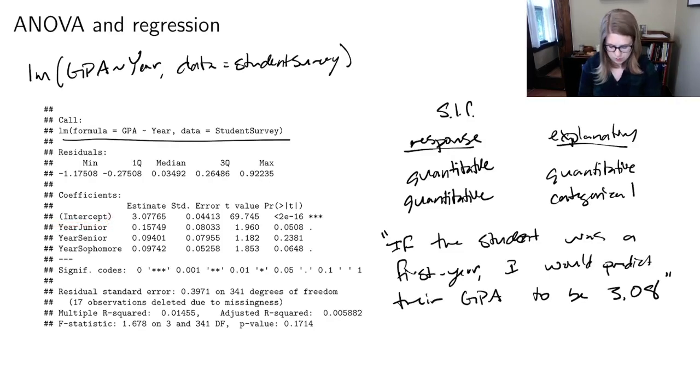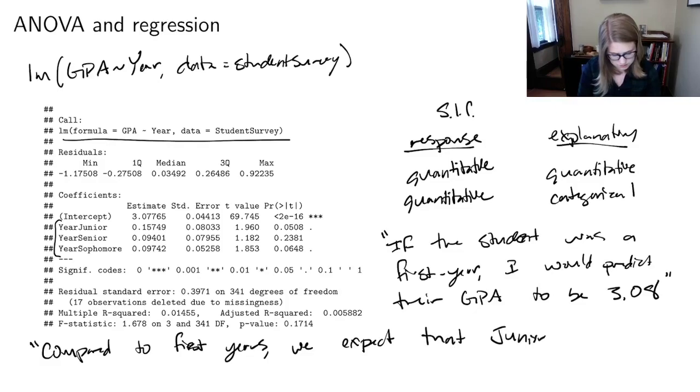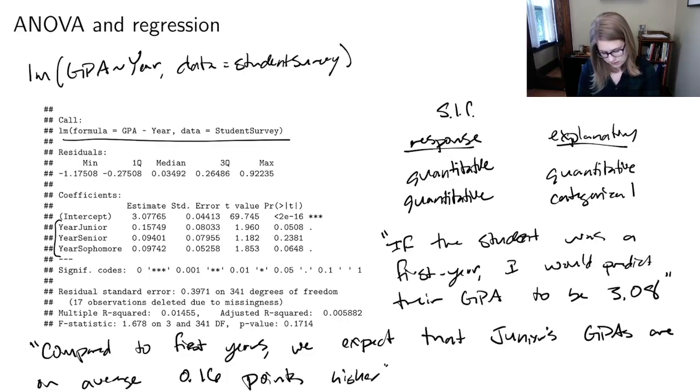And then when we're going to interpret the other terms in our table, we're going to have to do compared to the reference group. So in this case, compared to first years, we expect, or the model would predict something like that, that juniors' GPAs are on average 0.16 points higher. And again, I'm rounding from this 0.157.